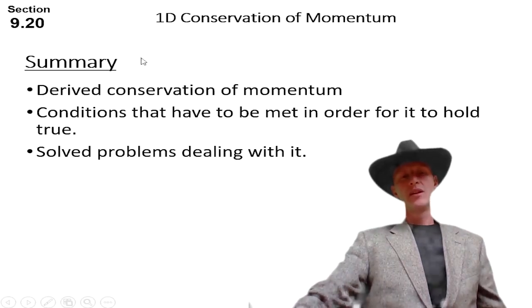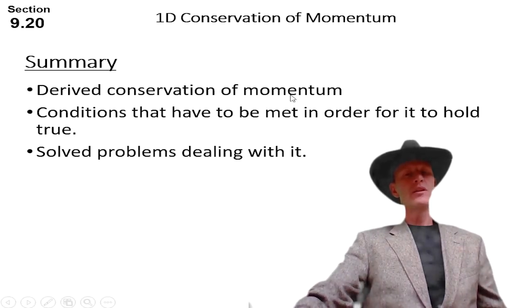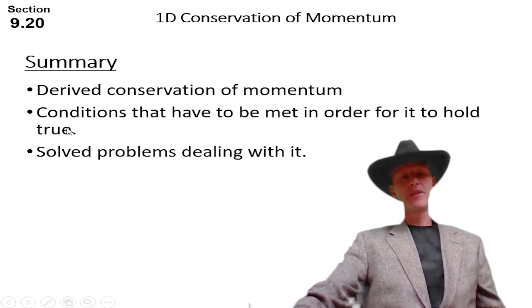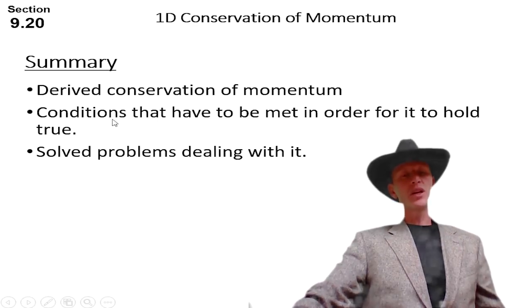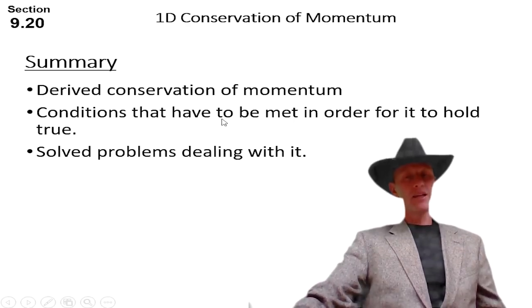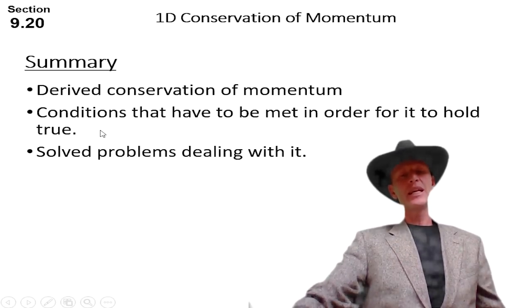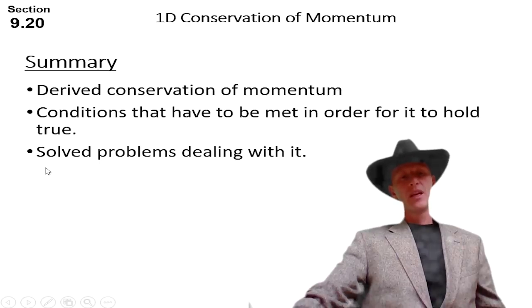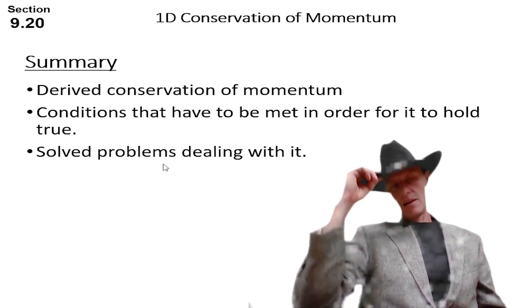That's it, folks. We derived the conservation of momentum from Newton's third law and the impulse momentum theorem. And we talked about those two conditions that need to be met in order for this law of conservation to be true. It has to be closed and it has to be isolated. And then we solved problems dealing with it. Cowboy Joe out.